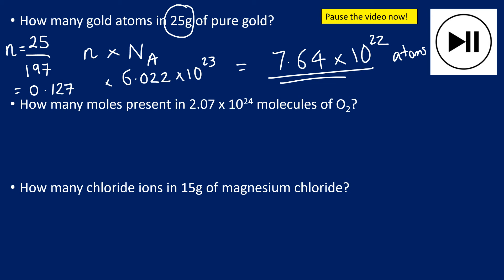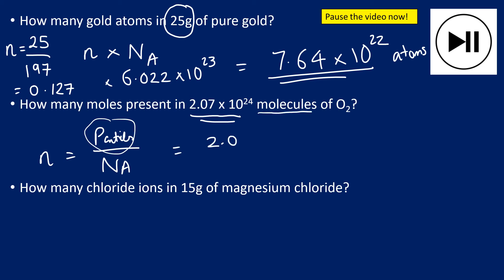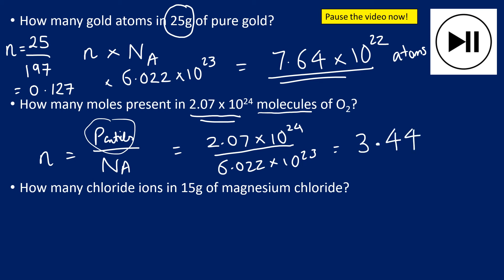Next: how many moles in 2.07 × 10²⁴ molecules of O₂? This time we rearrange the equation — moles equals particles divided by Avogadro's constant. So 2.07 × 10²⁴ divided by 6.022 × 10²³ equals 3.44 moles. Note that moles does not have a unit — it's just a number.